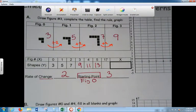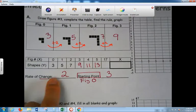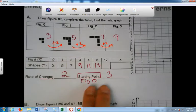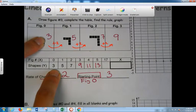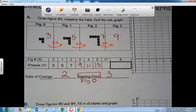So the 3 is your starting point. 3. Okay? Writing this down. So the rate of change is 2. I'm changing by 2. Starting point is figure 0, 3, figure 0, 3. Okay? Do we see it?